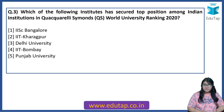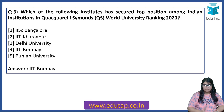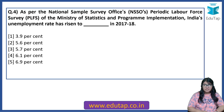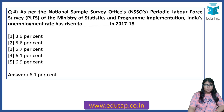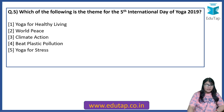Which of the following institutes has secured the top position among Indian institutions in the QS World University Rankings 2020? The answer is IIT Bombay. As per the National Sample Survey Office Periodic Labour Force Survey (PLFS), India's unemployment rate has risen to 6.1% in 2017-18. Just mark this particular question — it is important.